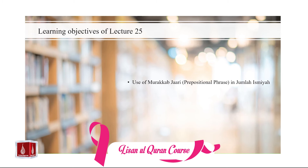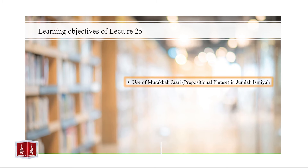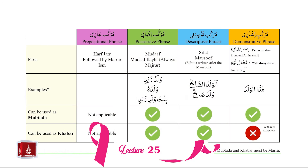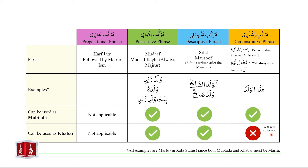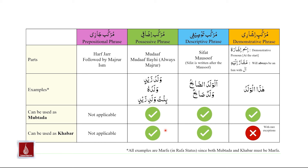In this lecture, we will study the use of murakkab-e-jaari or prepositional phrase. In the previous lecture, we studied the use of murakkab-e-jaari, murakkab-e-tausifi, and murakkab-e-jaafi in jumla-ismiyah, and we reached the following conclusions. Murakkab-e-jaari or demonstrative phrase can be used as muptada in jumla-ismiyah and cannot be used as khabar, with rare exceptions. Murakkab-e-tausifi can be used both as muptada and as khabar. Similarly, murakkab-e-jaafi can be used as muptada and also as khabar in jumla-ismiyah.